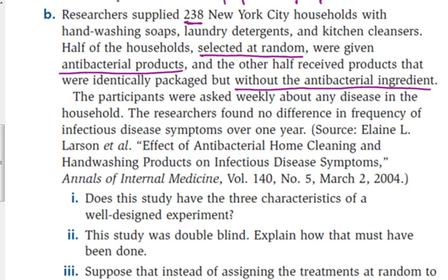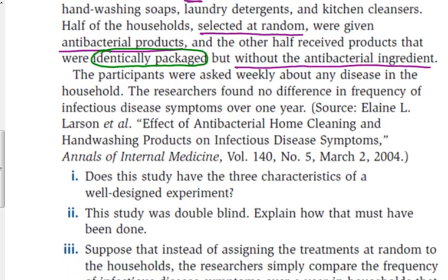This study was double-blind. How did they achieve it? Subjects were blinded because the products were identically packaged — so even if participants knew each other and knew someone else was in the study, they wouldn't be able to tell. The evaluators were blinded because they simply weren't told which households were getting which product — you assign them a number and the researchers don't know the difference.